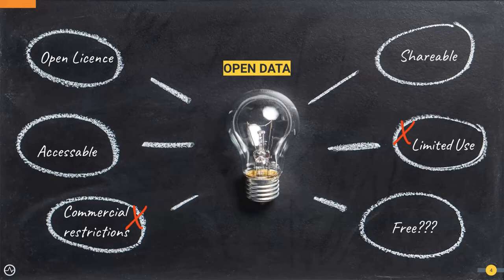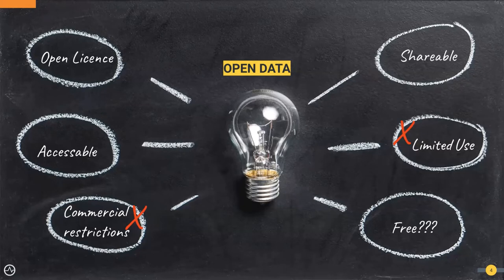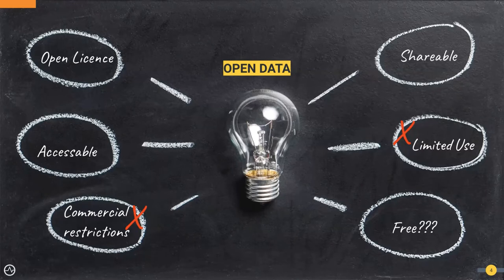Accessible data means you can get it quickly and easily — filling in 500 forms and waiting six weeks is arguably not open data. There's also the question of machine readability: a lot of data is available in PDFs or formats harder to interpret and analyze, which are not easily consumable and can't easily be pulled into systems and processes for analysis. The main thing is you can access it, share it, and do whatever you like with it.